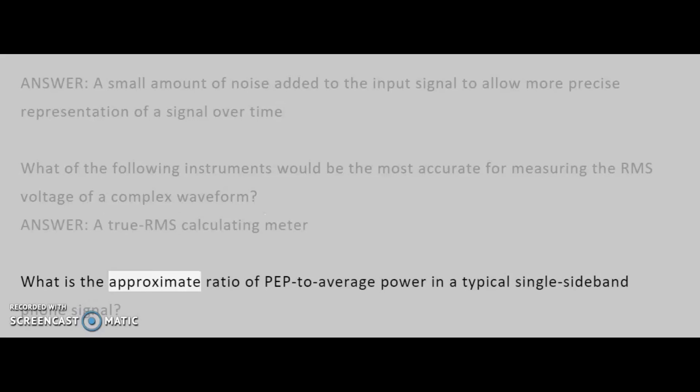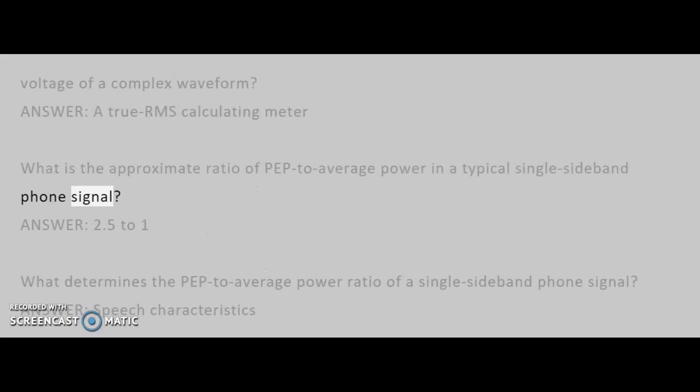What is the approximate ratio of PEP to average power in a typical single sideband phone signal? Answer: 2.5 to 1.